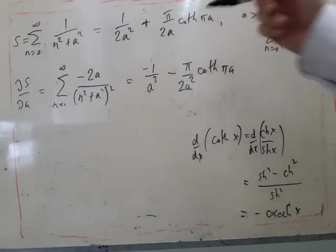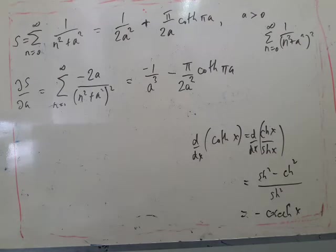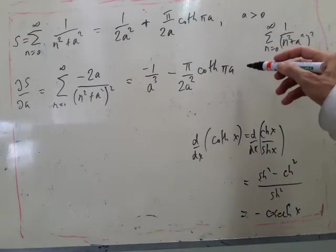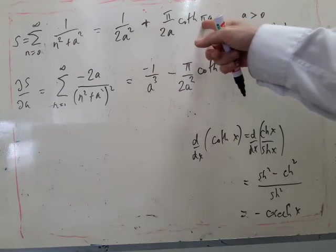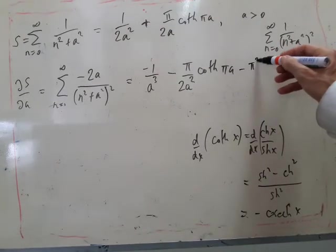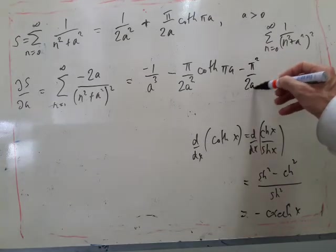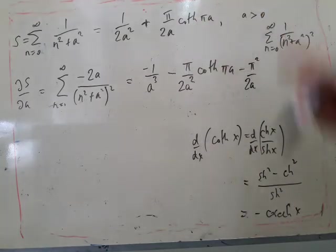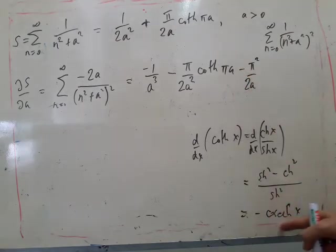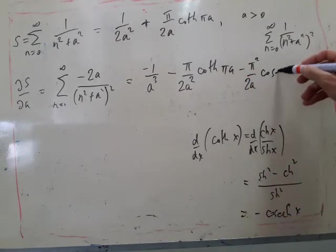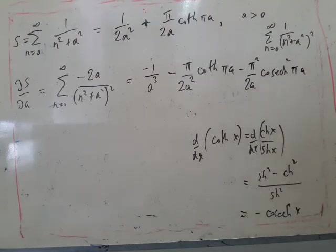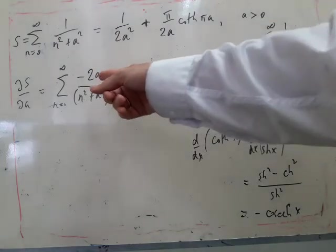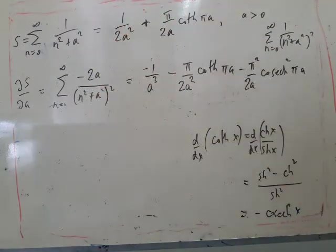So derivative of this is, we've got a factor of pi here, sorry, differentiating with respect to A, we've got a factor of pi, so it gives us a pi squared. We've got 2A still, and differentiating the coth gives us minus coshech squared pi A. So then all we need to do is divide both sides by minus 2A.